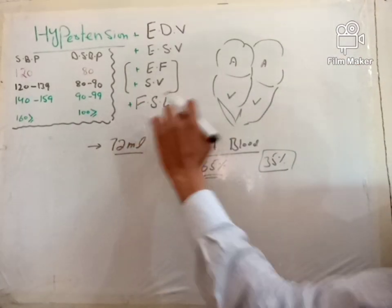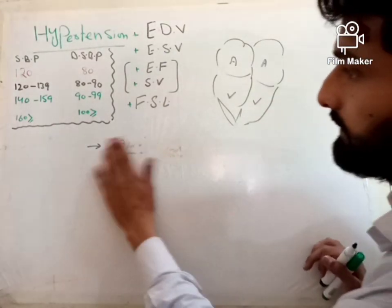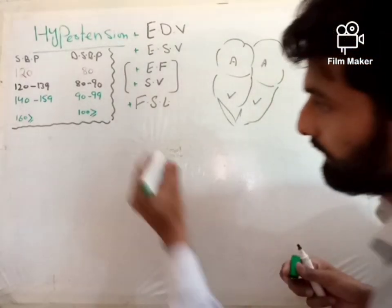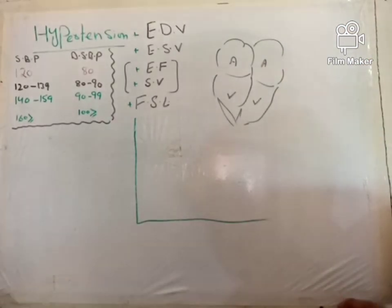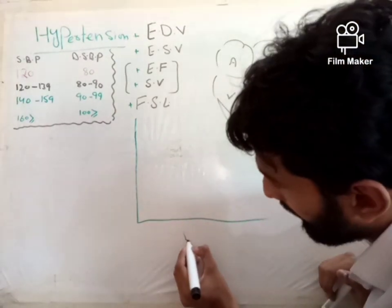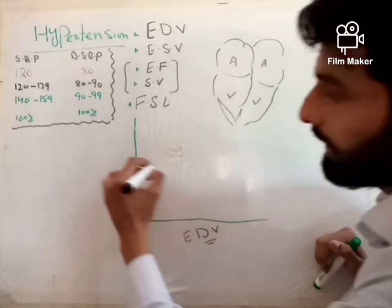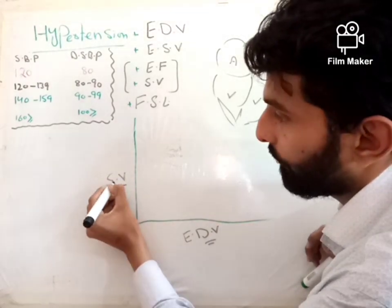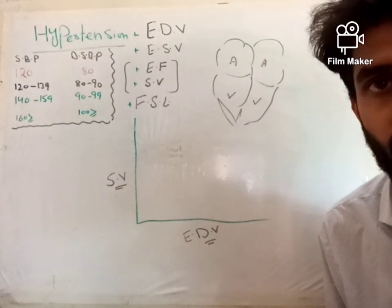Now, Frank-Starling law states that if end diastolic volume is more, the stroke volume will be more.